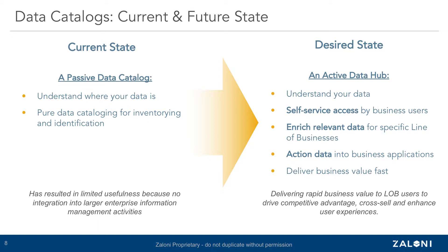Over the course of the remainder of this webinar, we're going to drill into the active data hub and look at a couple of different areas. First, we're going to look at a maturity model that looks at how organizations can evolve and help them identify where they are and what the next steps are towards getting to an active data hub — so that they don't have to do it all in one shot. We'll also look pretty deeply at the capabilities of the Zaloni data platform and some specific use cases from customers we've been working with over the past year.